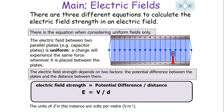That equation can be applied to any electrical field. However, we can also consider an equation which only applies to uniform electrical fields — for example, the electrical field between two parallel plates such as a capacitor. A charge will experience the same force wherever it is placed between the plates. The electrical field strength depends only on two factors: the potential difference between the plates and the distance between those plates. So E is equal to V over D — potential difference divided by separation.